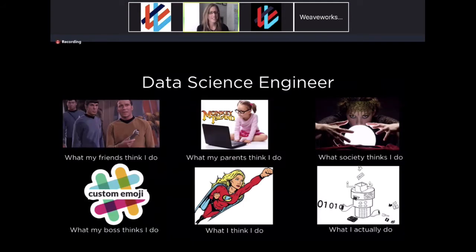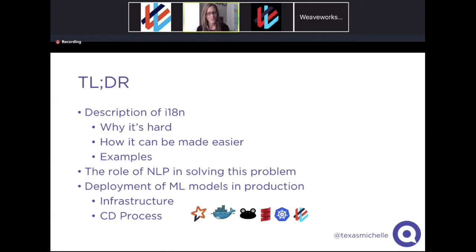Some of the things we do at Cordoba — I wish I were building a universal translator, but I'm working on some other really cool things. Cordoba is really focused on the field of internationalization. We'll talk about what that means, why it's so difficult, what we can do to make it easier, and I'll give you some examples of what it looks like when it goes wrong. I'll also talk about NLP components I've been working on to help solve this problem.